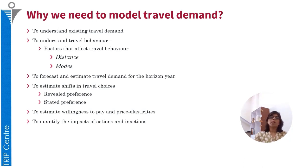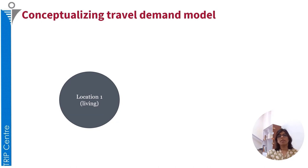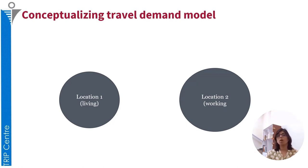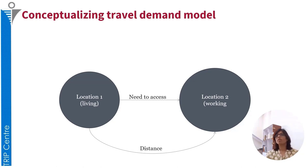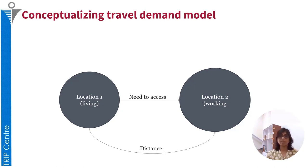Overall, modeling travel demand can help you better understand the impact of actions and inactions in the future. Let us first conceptualize what travel demand is. Consider there is a location 1 where people are living and they need to access location 2 where people are working. They need to travel a certain distance to reach from location 1 to location 2, which incurs certain cost. While cost is incurred by the people, there are associated benefits with respect to accessing that location 2. Based on the cost, individual preferences, and availability and capability of individuals, they choose a certain mode, which also helps in determining the routes.